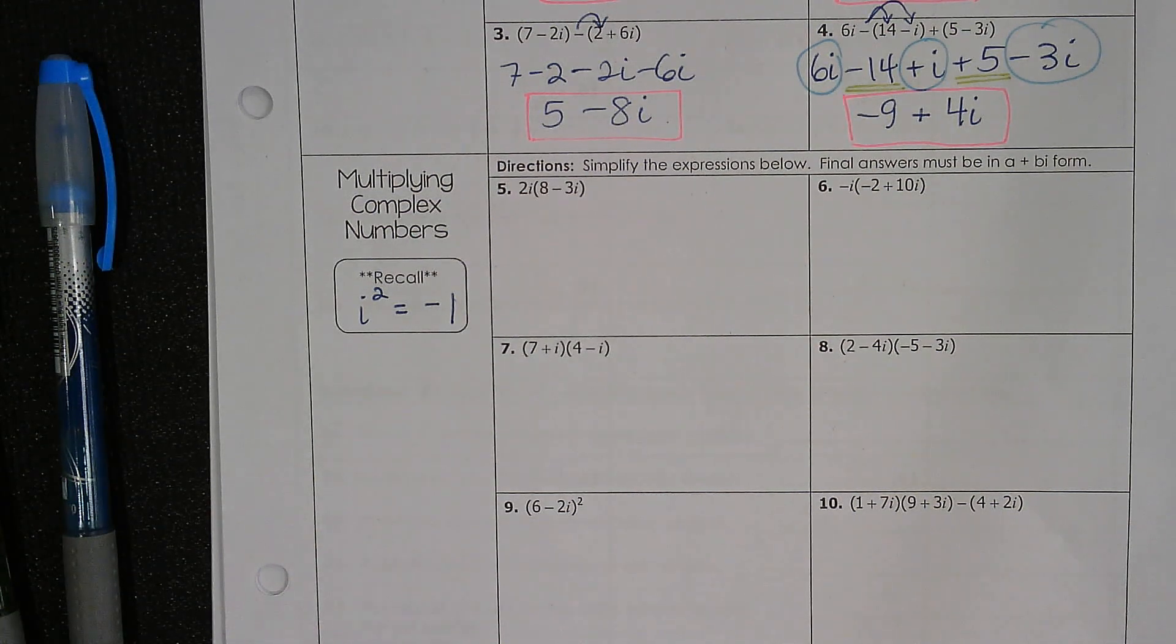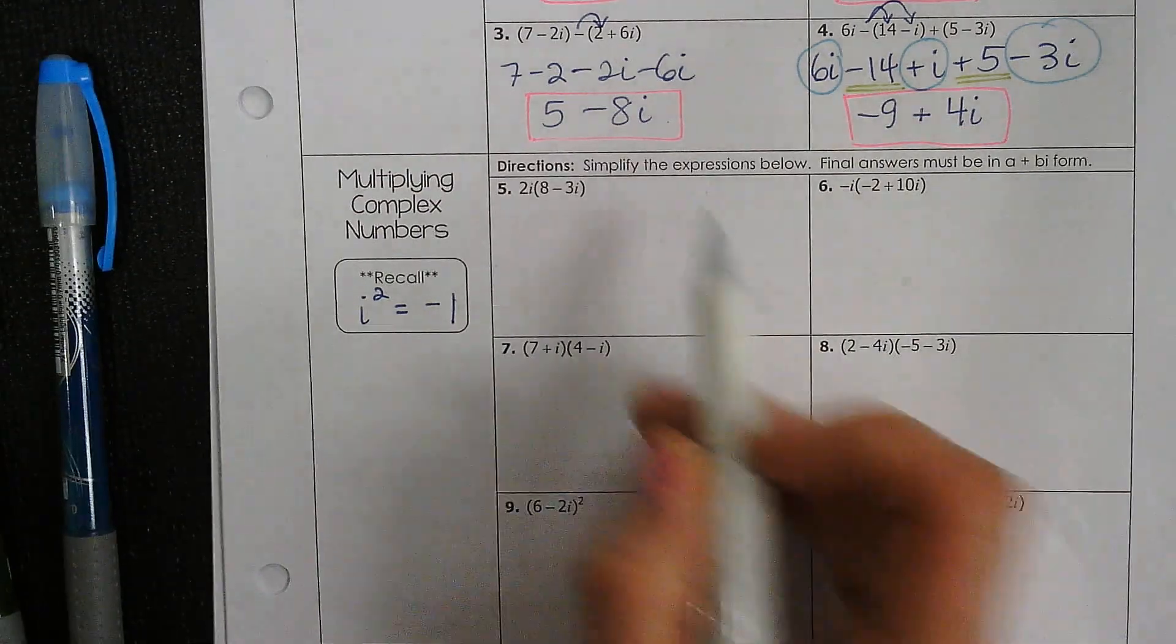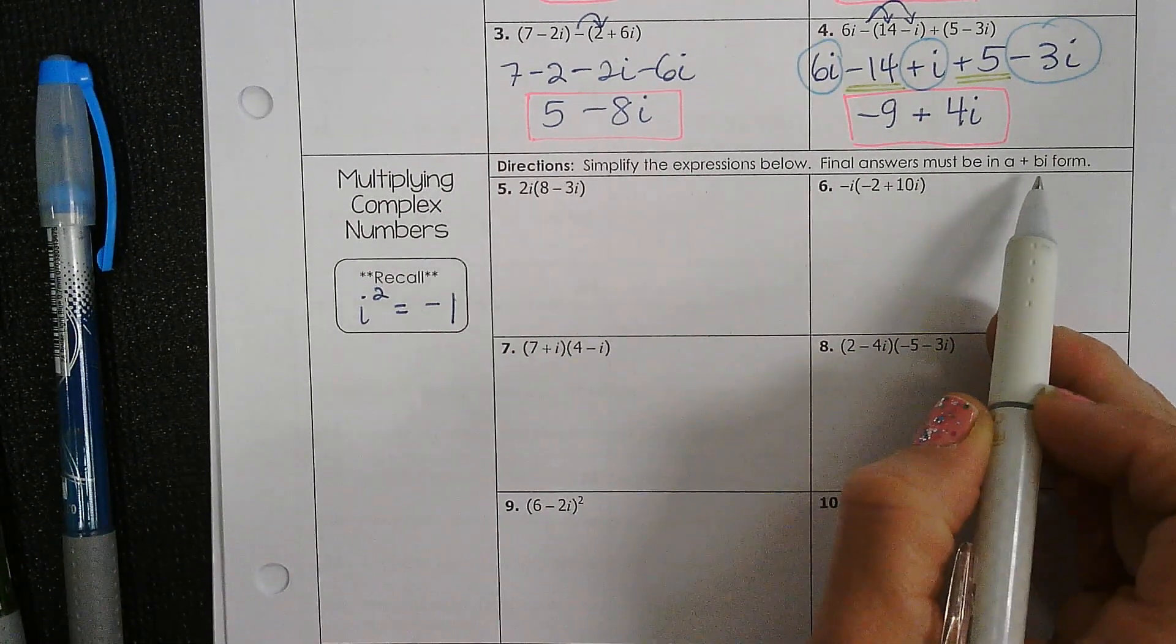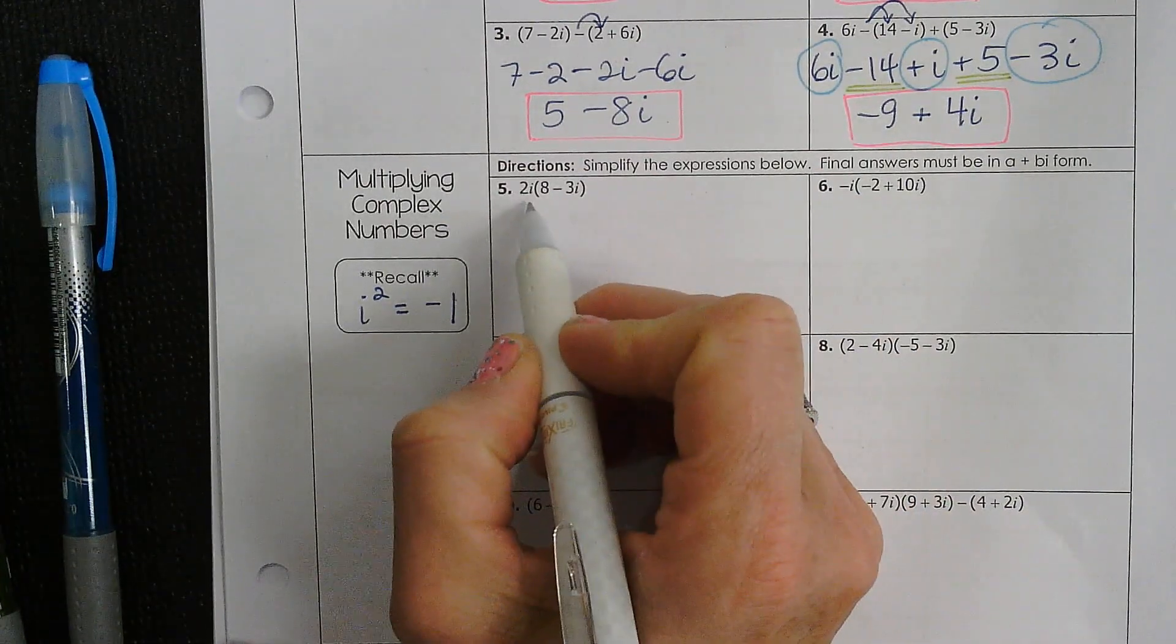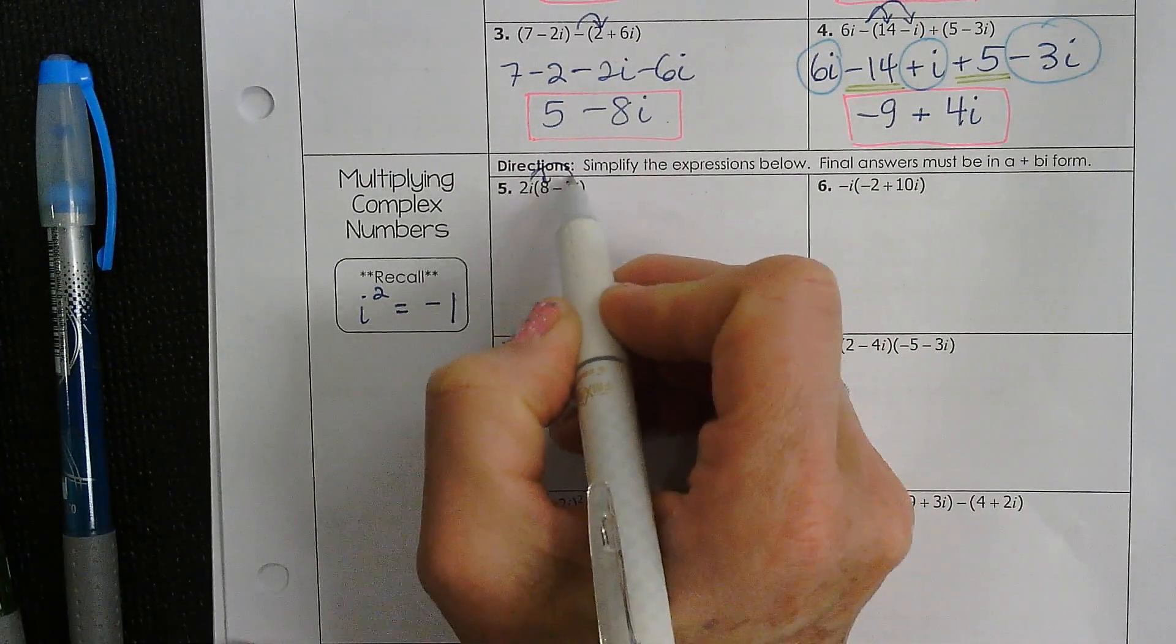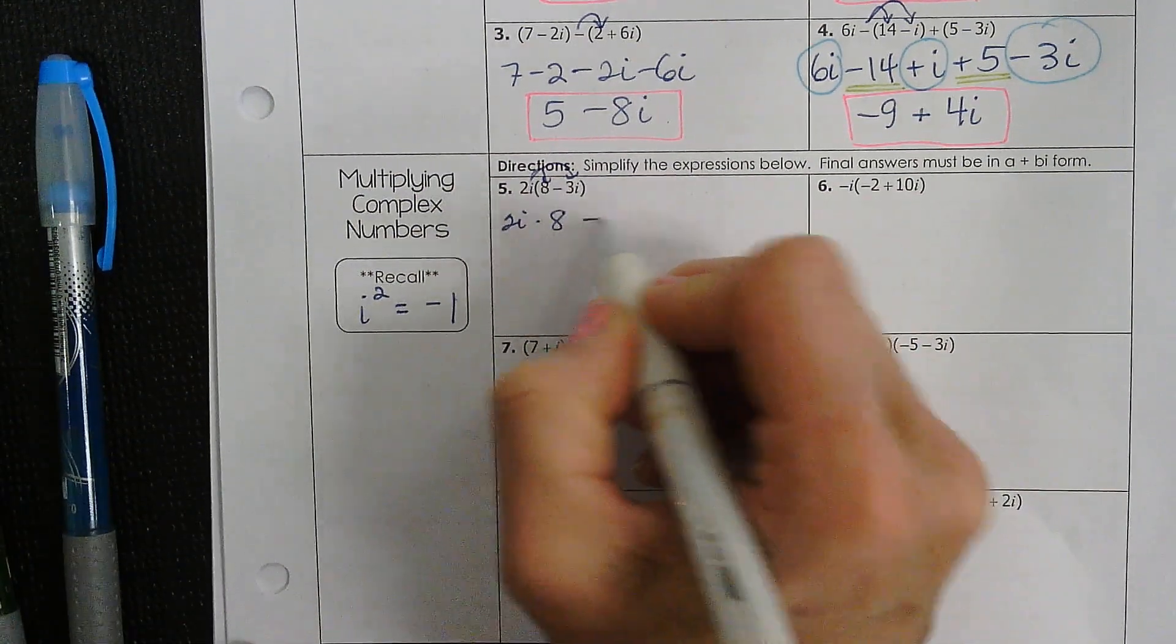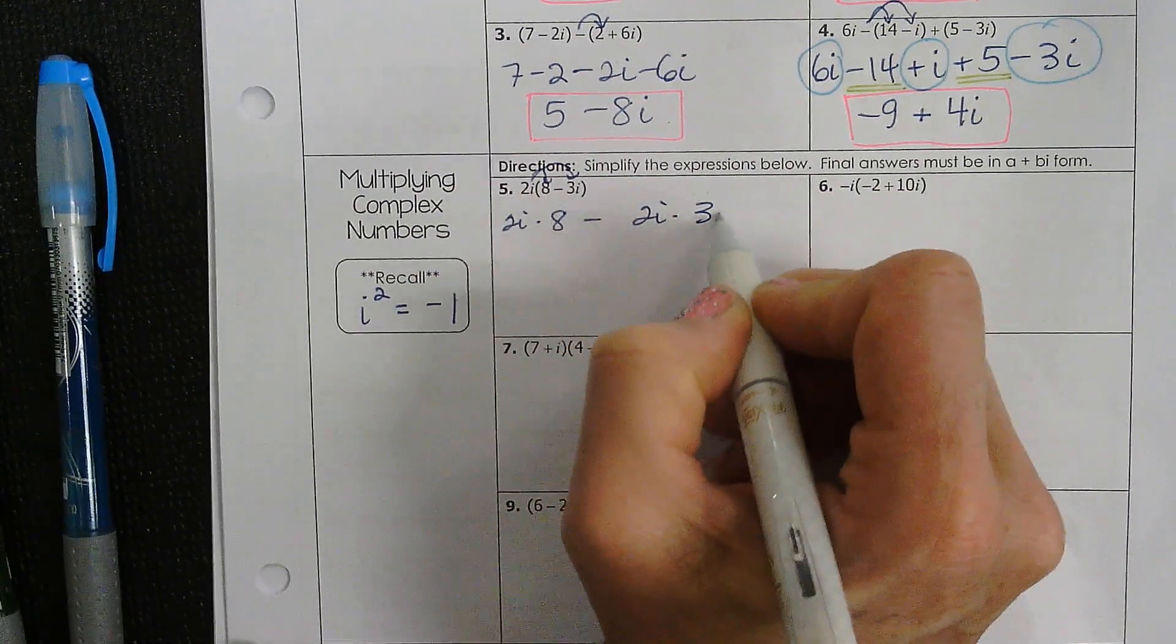So this is simplifying. Remember, you have to put your final answer in a plus bi form. We're going to distribute the 2i, and you get 2i times 8 minus 2i times 3i.